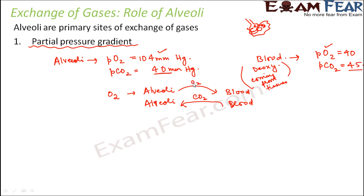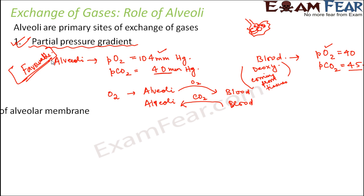So this movement of oxygen and carbon dioxide happens as per the partial pressure gradient. The concept of partial pressure gradient is favorable when we talk about the exchange of carbon dioxide and oxygen across the alveolar membrane. The second factor is the thickness of the alveolar membrane, and here the membrane involved in diffusion is the alveolar membrane.